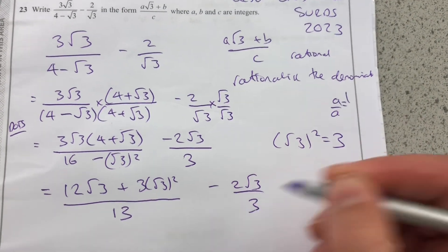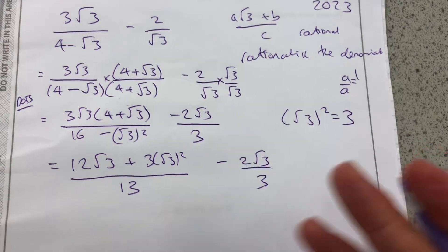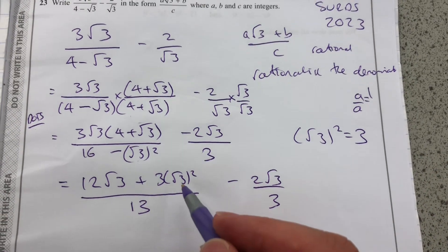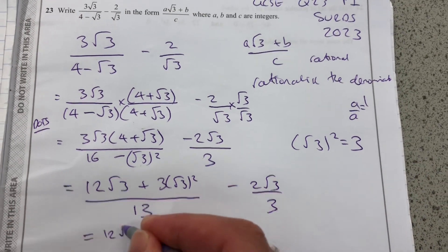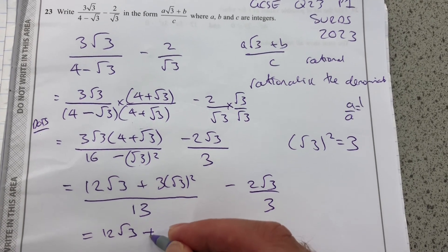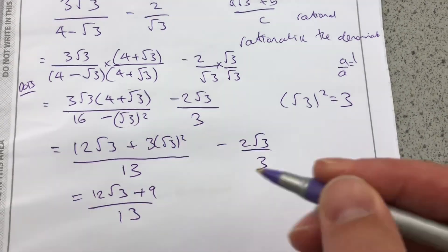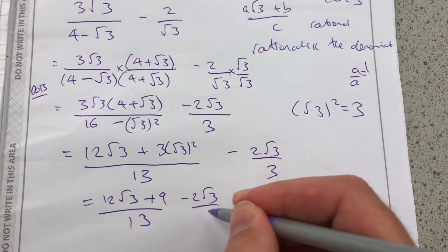Still got the 2 root 3 over 3. We're going to combine those fractions later. So we're going to have 12 root 3 plus 9 over 13. Minus 2 root 3 over 3.